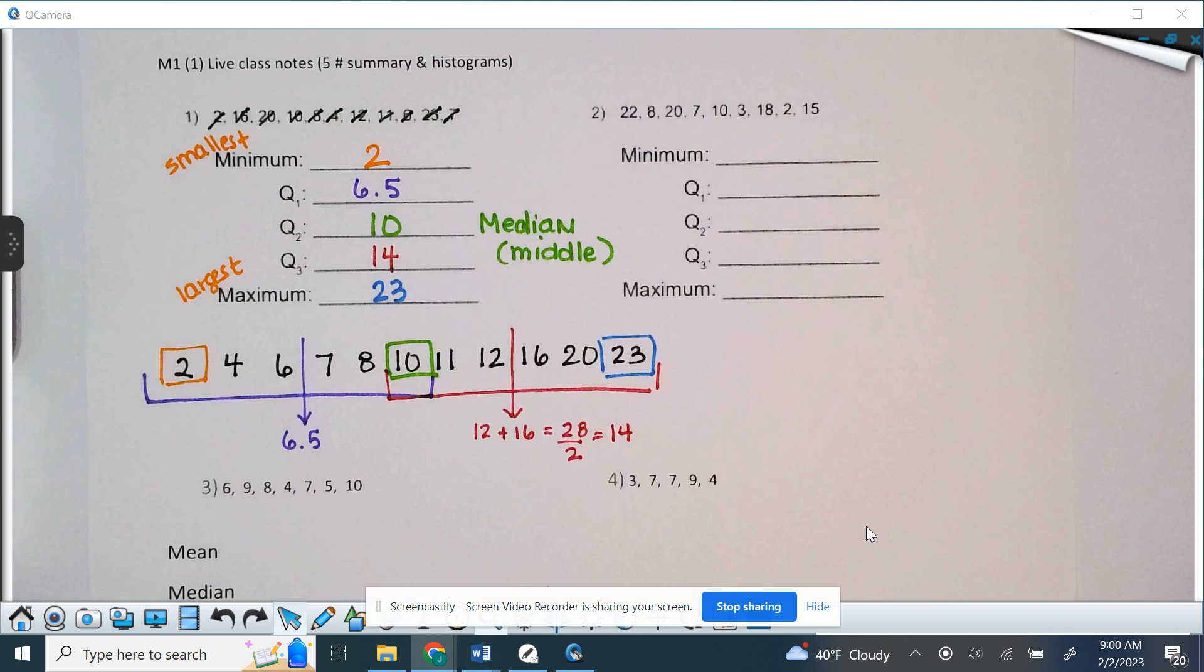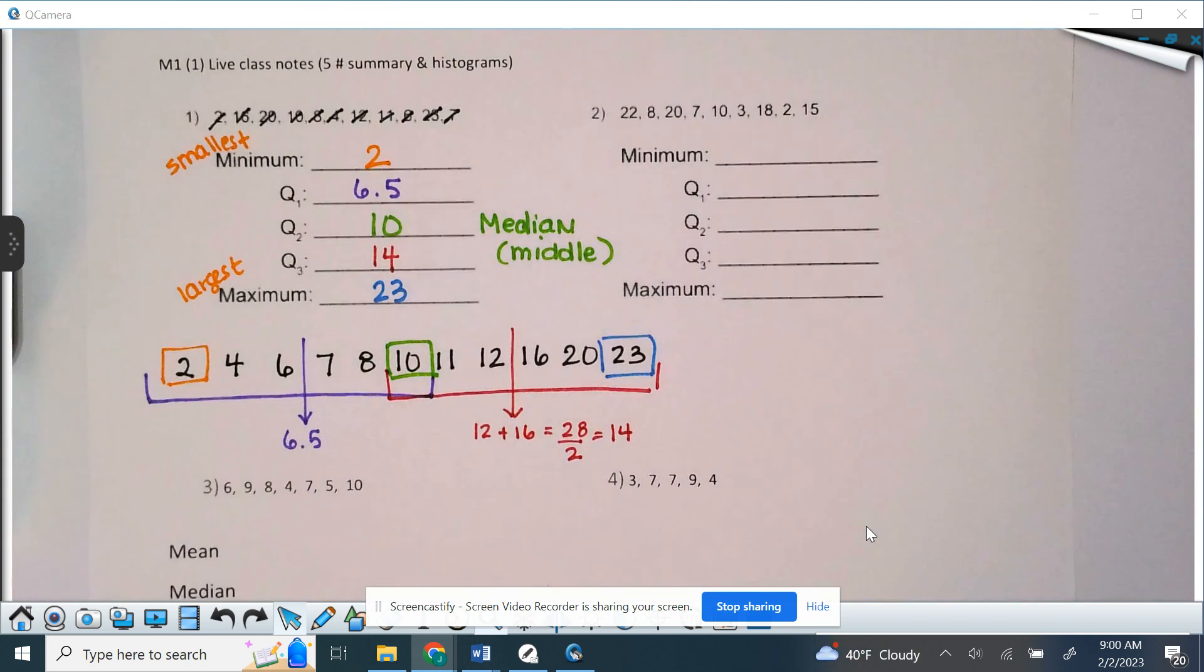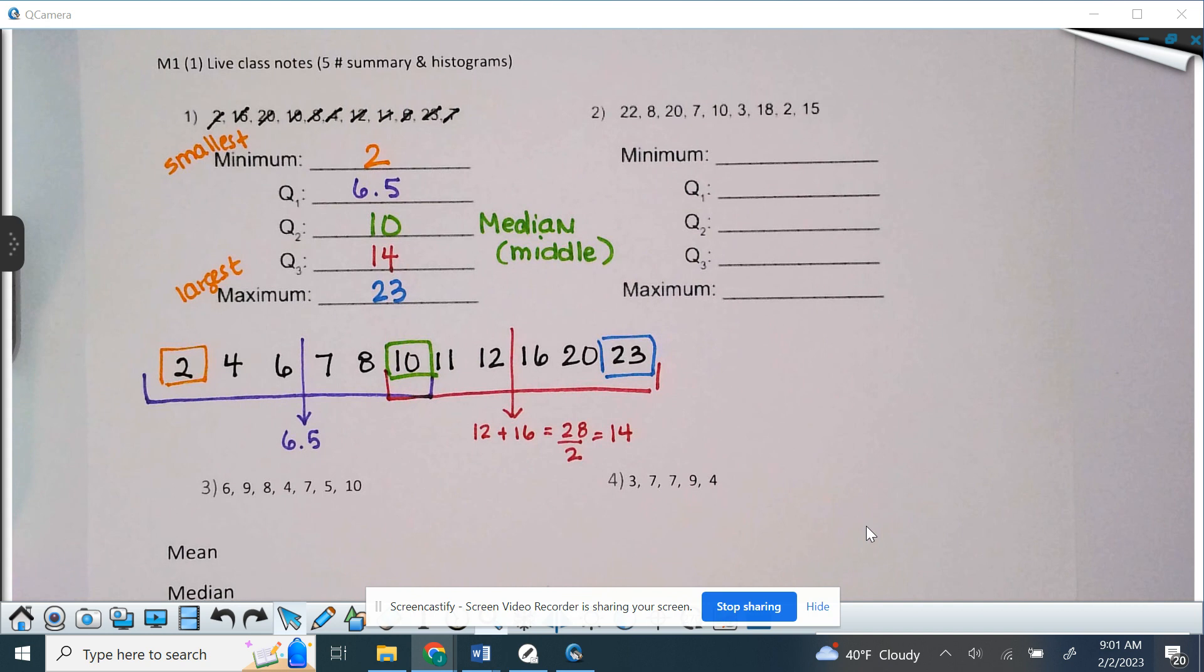Now, that is the most basic five number summary is what that's called. Five number summary. So, minimum, Q1, Q2, Q3, and maximum. Now, maybe newer a little bit. Oh, I'm sorry. Not yet. We're still doing old stuff.